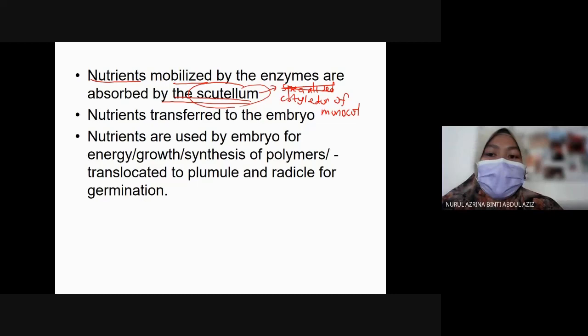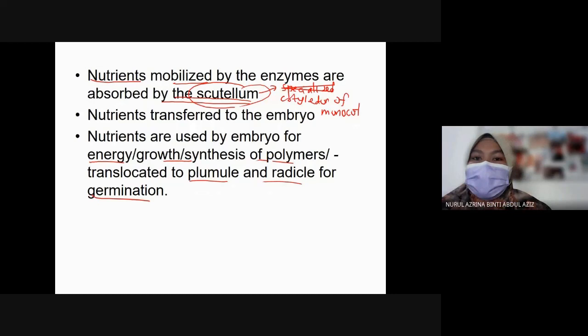The nutrients are then transferred to the embryo, used for energy, growth, and synthesis of polymers, and translocated into the plumule and radicle for germination. The plumule becomes the shoot and the radicle becomes the root.